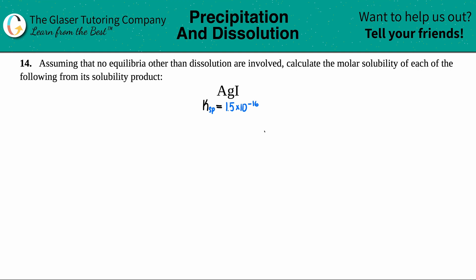Number 14: assuming that no equilibria other than dissolution are involved, calculate the molar solubility of each of the following from its solubility product. We have silver iodide (AgI), so we have to find the molar solubility of AgI from its solubility product.